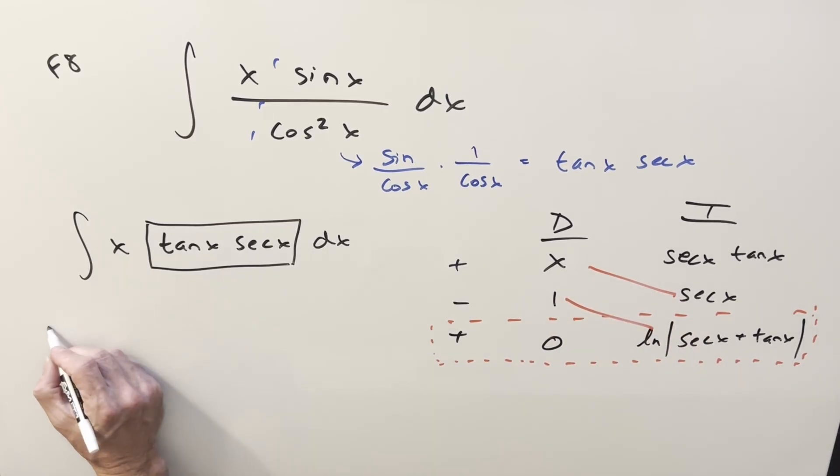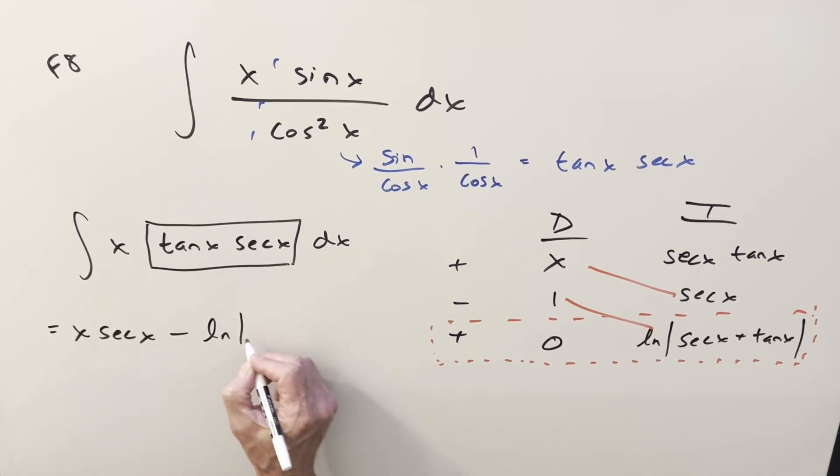Put it together, and for the solution on this, we just get x secant x minus sign right there. Natural log, absolute value, secant x, plus tan x, add a plus C, and that's it.